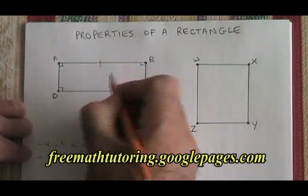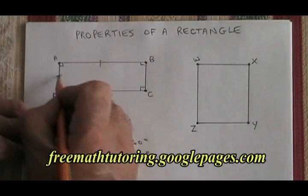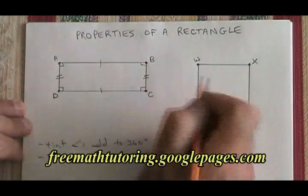These two opposite sides have to be congruent and parallel, and these other two opposite sides have to be congruent and parallel.